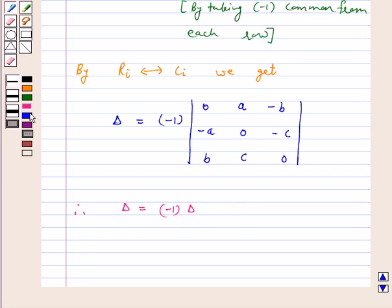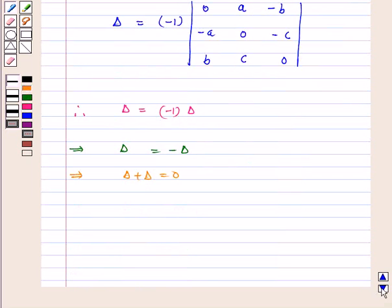This implies delta is equal to minus delta. Again, this implies delta plus delta is equal to 0, which implies 2 delta is equal to 0.